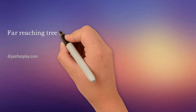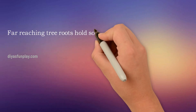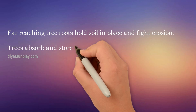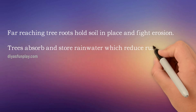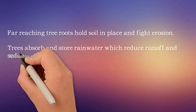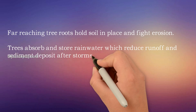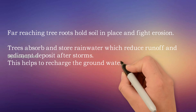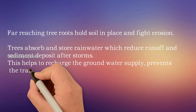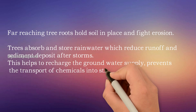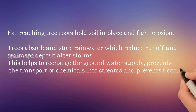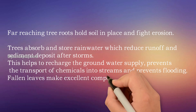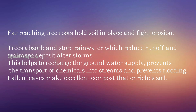Far-reaching tree roots hold soil in place and fight erosion. Trees absorb and store rainwater which reduces runoff and sediment deposit after storms. This helps recharge the ground water supply and prevents the transport of chemicals into streams and prevents flooding.